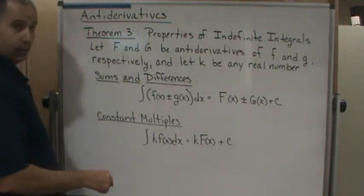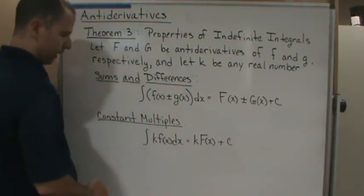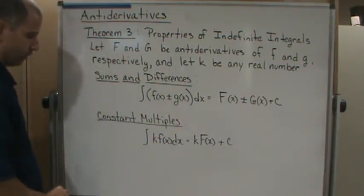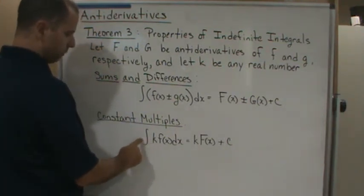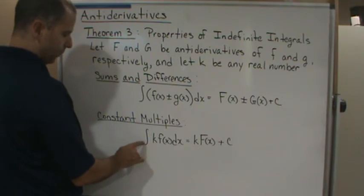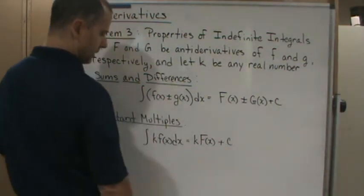Remember, we're integrating the function with respect to x. That's the integrating variable, or the variable of integration. Since it's a constant, we can pull it out, so it becomes k times the integral, which gives us kF(x) plus C.